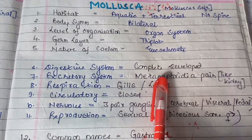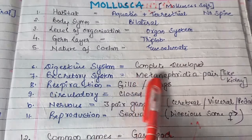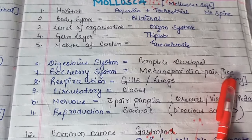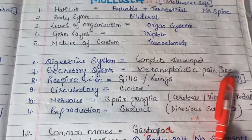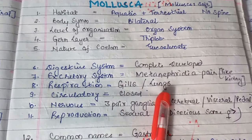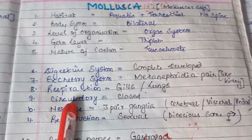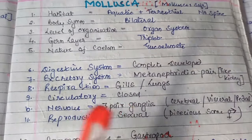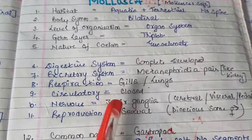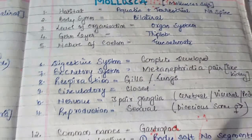Digestive system: it is also complete and well developed. For the excretory system, metanephridia pairs are found, which perform like kidneys. Respiration occurs through gills or through lungs. Circulatory system: it is closed — unlike Arthropoda which had open type, here it is closed. Body fluid and blood do not mix with each other.